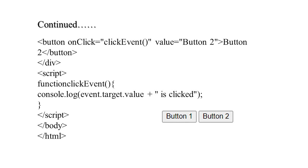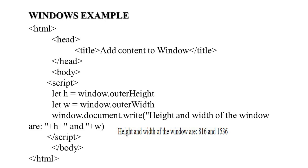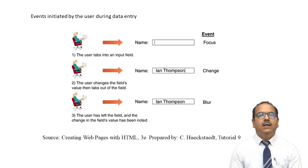In a window object example, two variables are declared: h = window.outerHeight and w = window.outerWidth. Then document.write displays the height and width of the window. The output shows width as 1536 and height as 816 — these are the number of pixels in the screen dimensions.